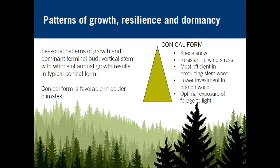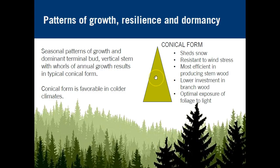The seasonal growth patterns and the presence of dominant terminal buds in vertical stems with whorls of annual growth results in a conical form. Conifers have this conical form with a dominant tip and branching along it. This kind of form favors colder climates — it tends to shed snow very effectively, is quite resistant to winds, and is quite efficient in producing stem width, focusing all energy on the primary stem as opposed to investment in branching.